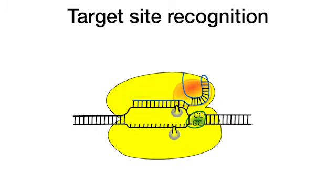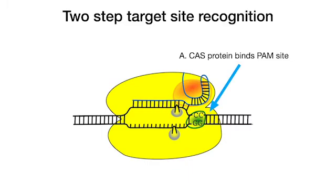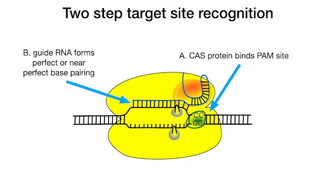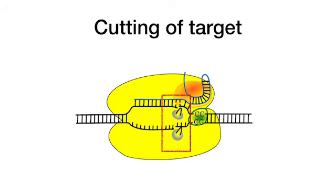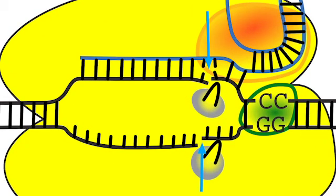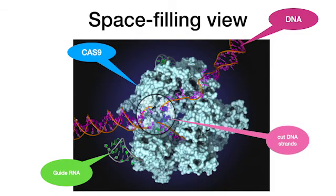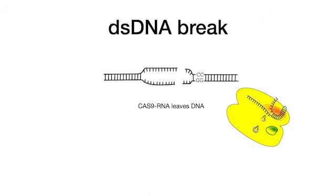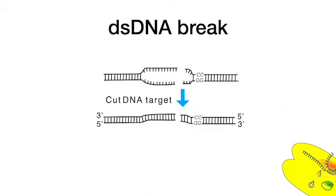To recapitulate: recognition of the target site is a two-step process. A) The Cas9 protein binds the PAM site. B) The guide RNA forms perfect or near-perfect base pairing with the DNA. Note that the RNA-recognized sequence alone is not sufficient — the PAM site must also be present. As a result of binding, each DNA strand is exposed to a nuclease and two single-stranded cuts are made three bases away from the PAM site, visible as we zoom in.